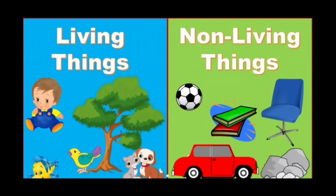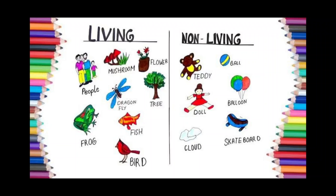Let's see what comes in living things and what comes in non-living things. The examples of living things are: people (human beings), mushrooms, flowers, dragon, tree, frog, fish, and birds. Non-living things examples are: teddy bear, ball, doll, balloon, cloud, and skateboard.